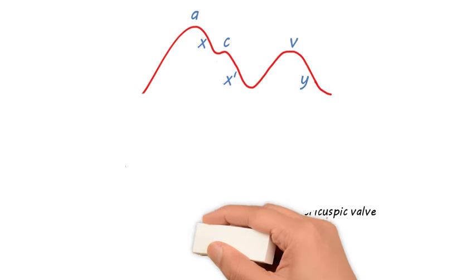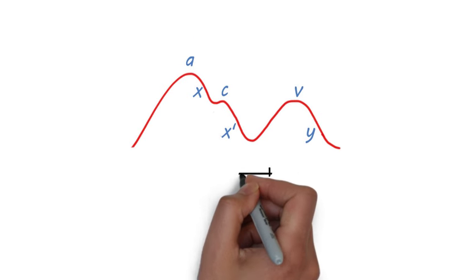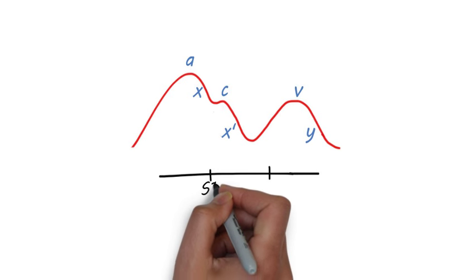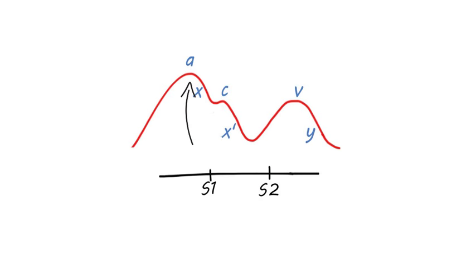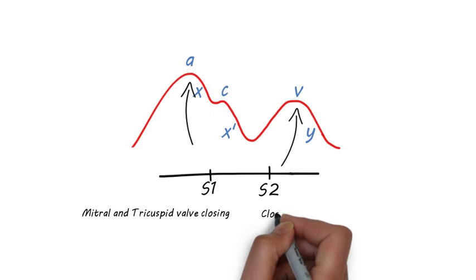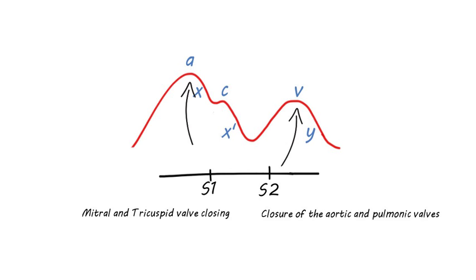To see how the biphasic pulse corresponds to heart sounds, here is the waveform in relation to S1 and S2. The first pulse is observed right before S1, the closure of the mitral and tricuspid valves at the start of systole. And the second pulse is observed right after S2, the closure of the aortic and pulmonic valves.